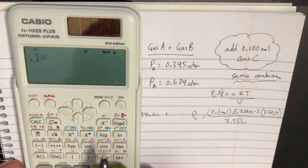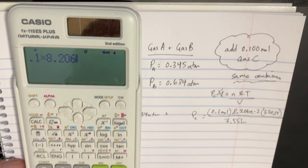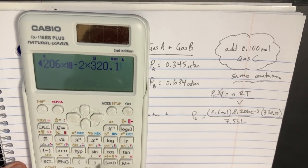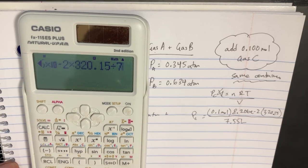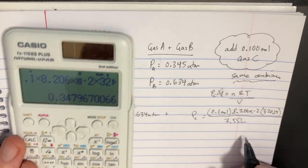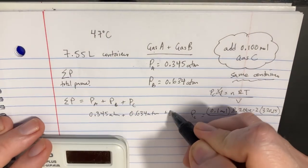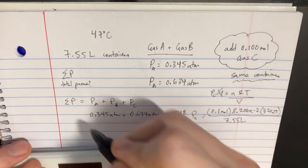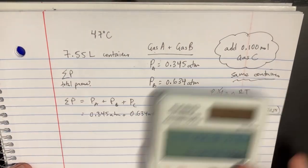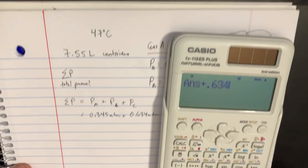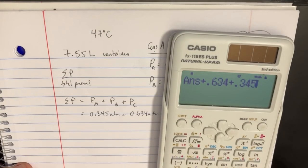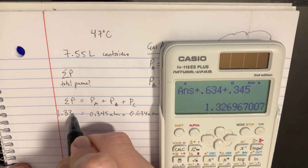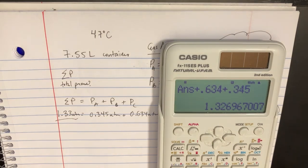So we're going to 0.1 times 8.206 times 10 to the negative 2, 320, and then we can divide that by 7.55. So we should get 0.348 something like that for this one. Let's try to add these up. Plus 0.634 plus 0.345. And we get the total pressure is 1.338 atmospheres. Not too bad.